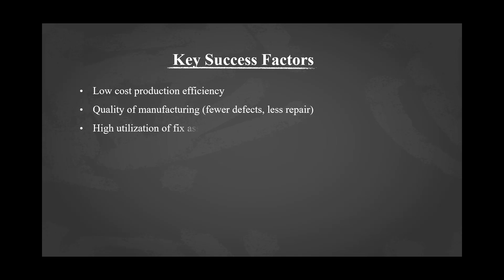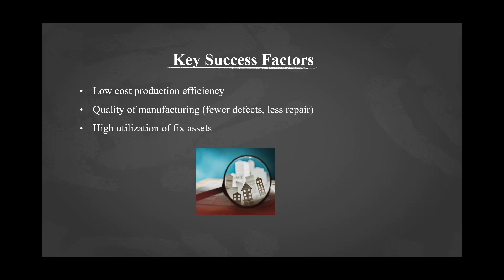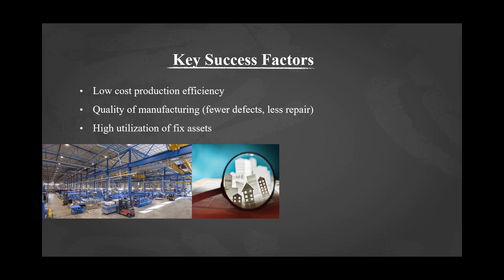Another key success factor is high utilization of fixed assets. If your company's ratio for utilization of fixed assets is high, it means your company is efficiently using its fixed assets, and this will definitely help in achieving optimization. If the ratio is low, it means your company is not using its fixed assets efficiently. Examples of fixed assets are property, plant, and equipment.